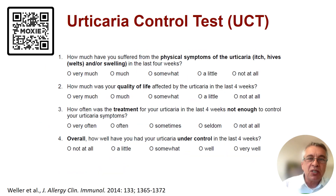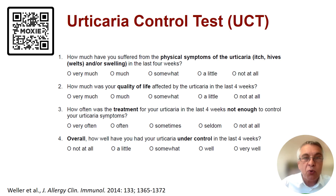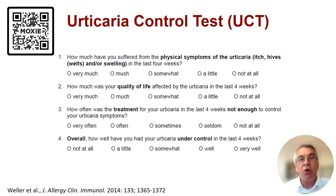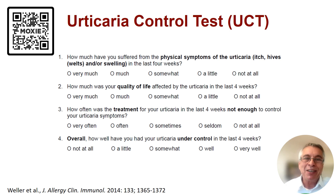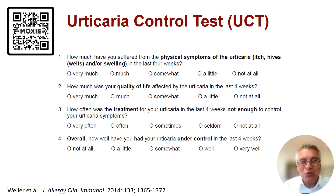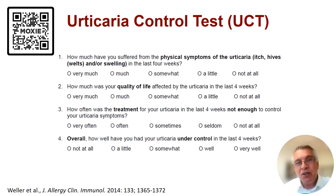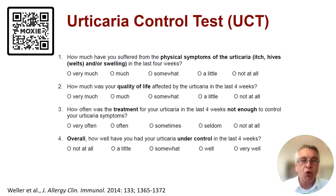What does the UCT look like? It's a simple tool: four questions, five answer options each. You get up to four points per answer, making 16 points total. The cutoff is 12 — between poorly controlled disease and well-controlled disease. The higher your UCT, the higher your levels of control.